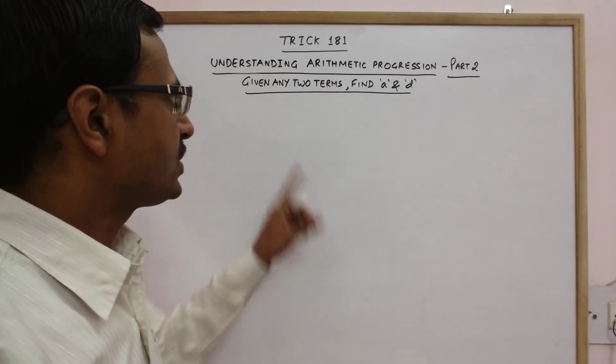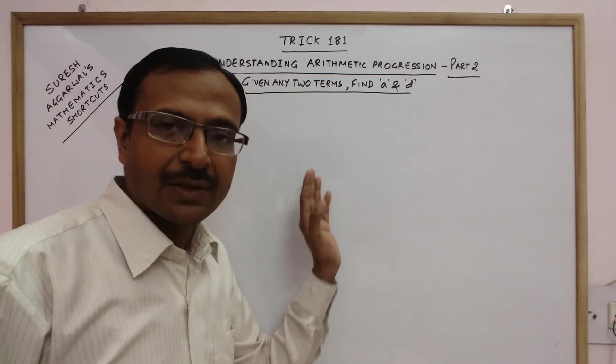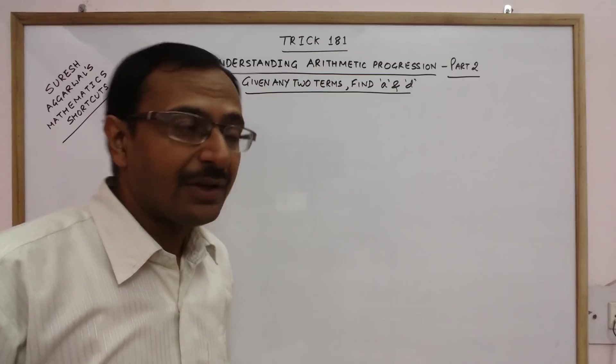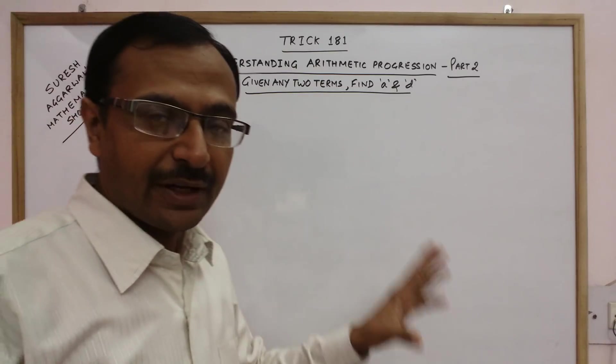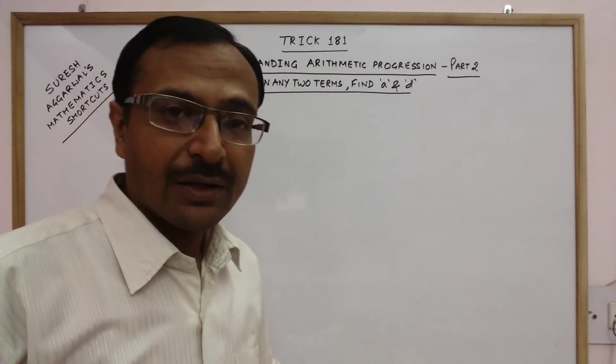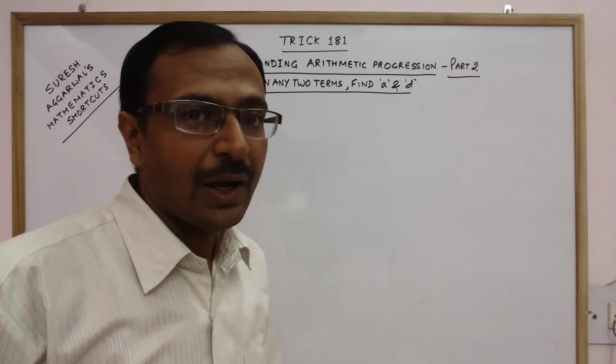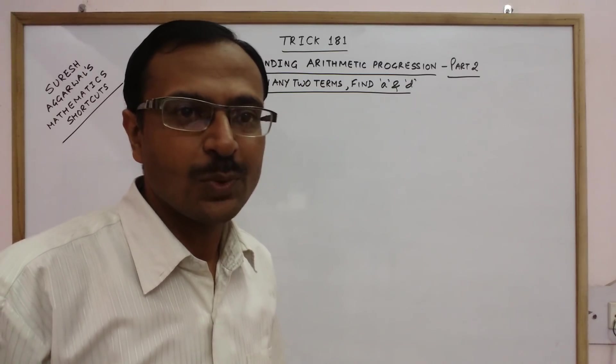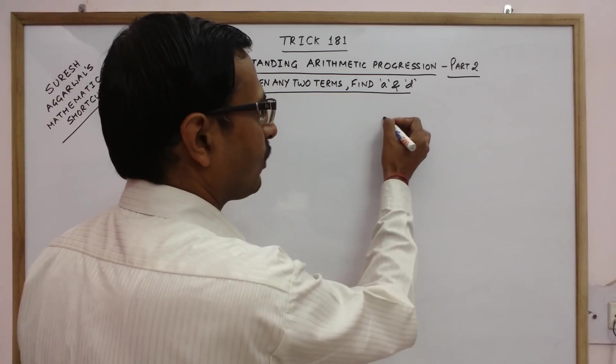So this question concerns the problem when we are given two terms of an arithmetic progression and we need to find the value of the first term and the common difference. For illustration I will take one example now.